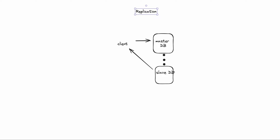This is simple read replication — whenever we write data into the master, we read it from the slave. Next, we will look at the CAP theorem.